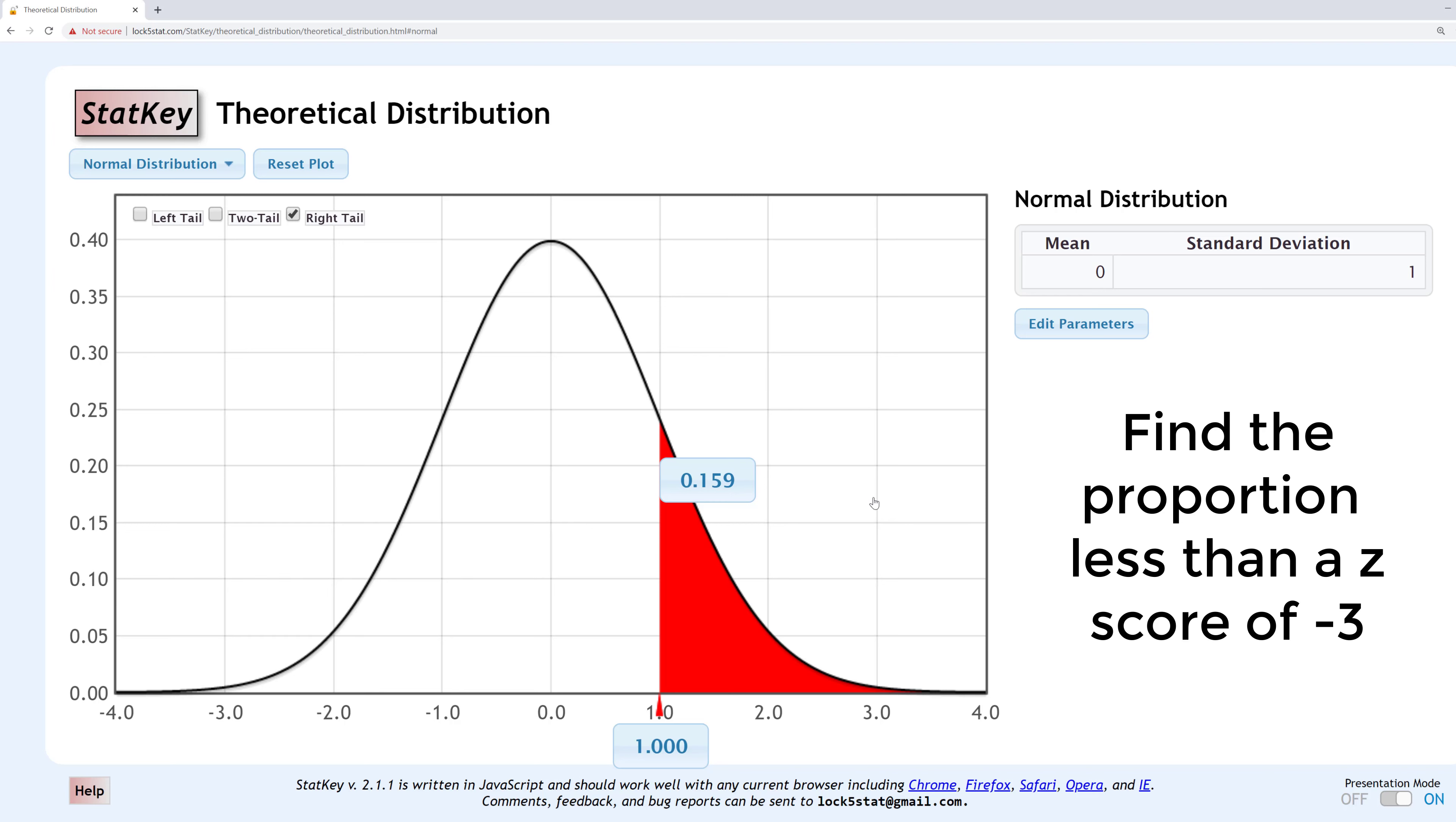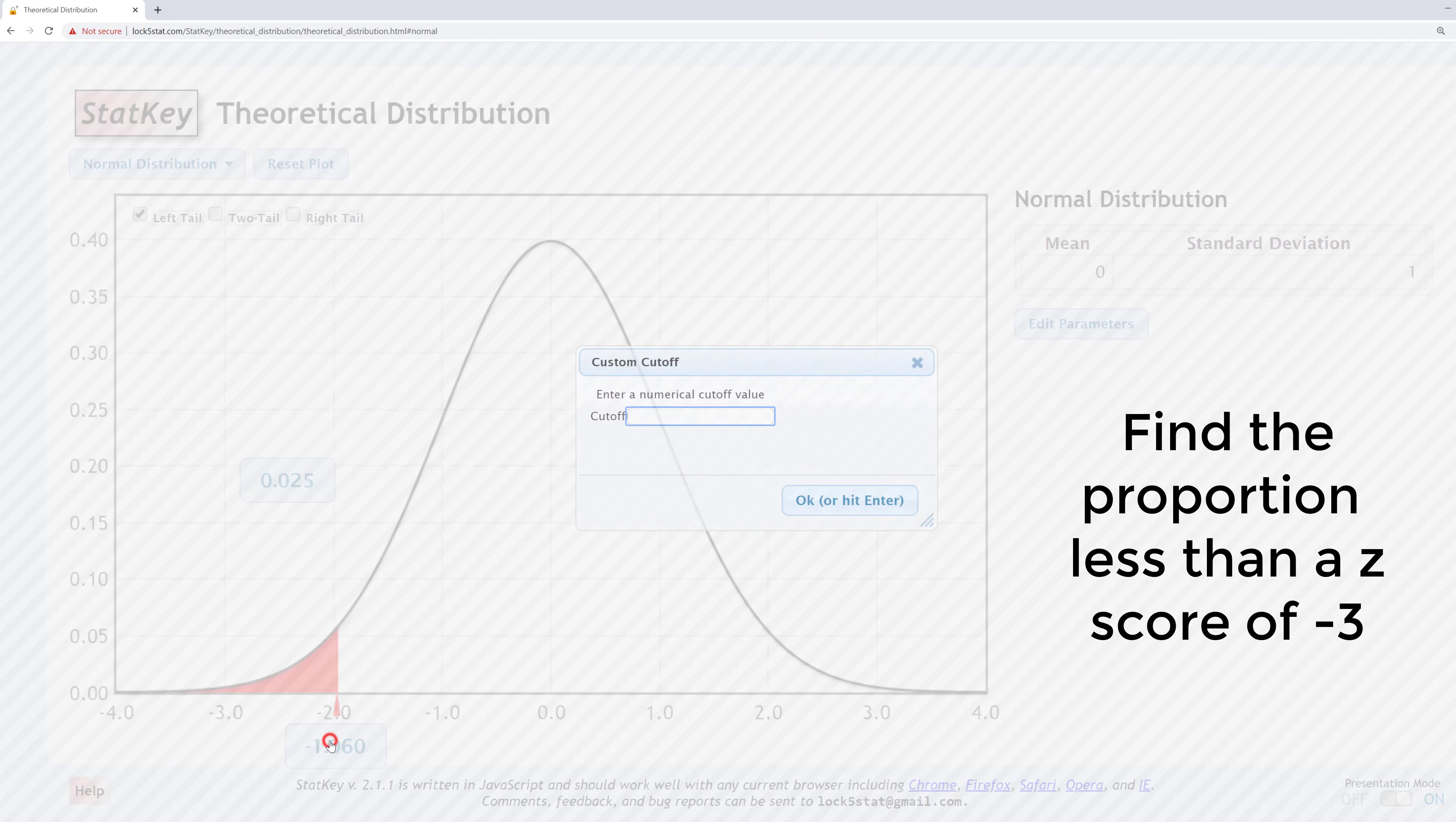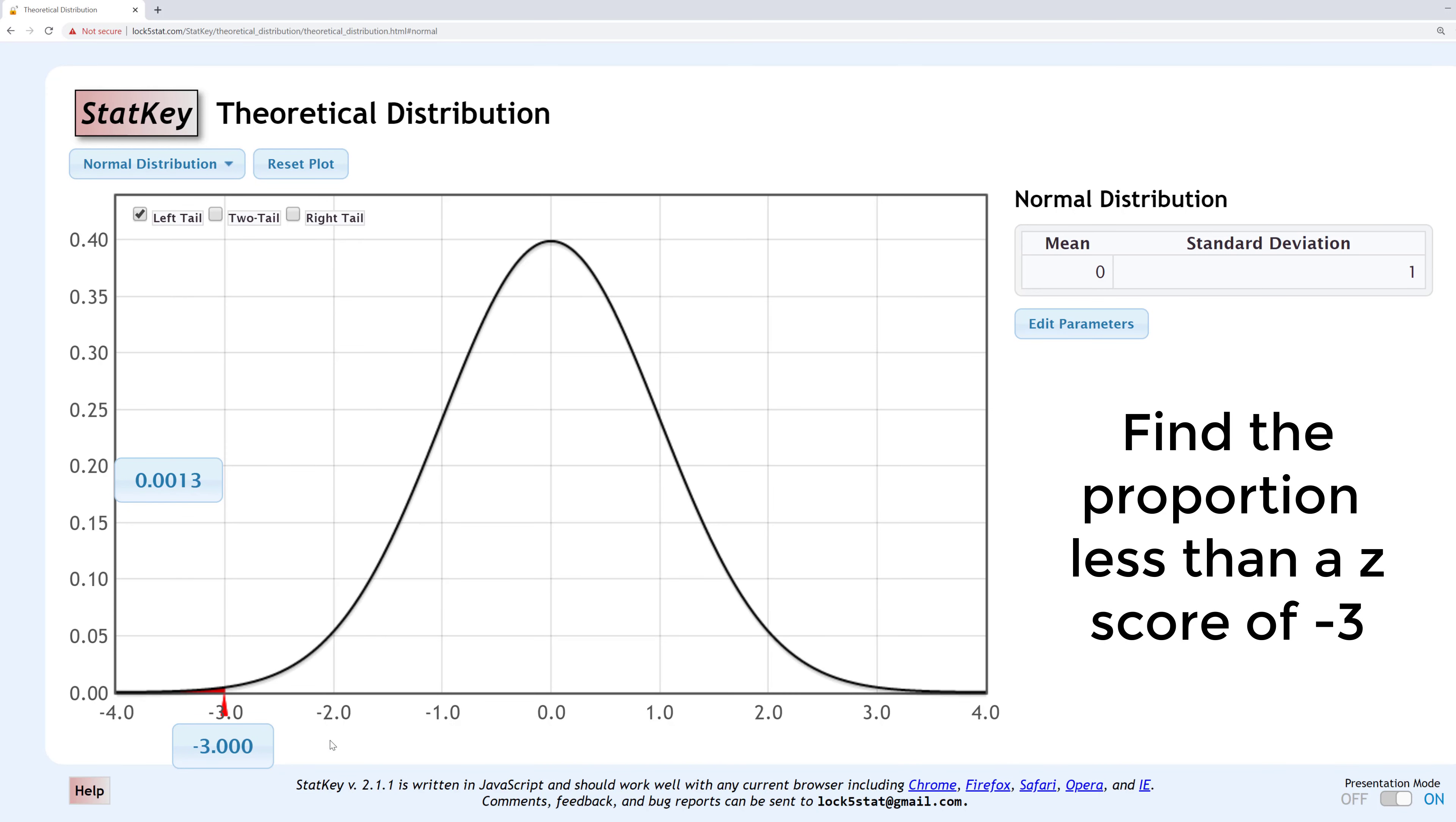Here's our second example. Find the proportion less than a Z score of negative 3. Less than means that we're looking for the area to the left of negative 3. I'll uncheck right tail and check left tail. I'll change the Z score at the bottom to negative 3. The area to the left of a Z score of negative 3 is 0.0013 or 0.13%. As you can see it's a very small area.